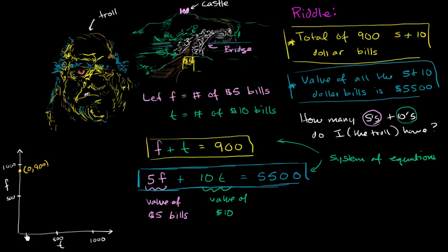So it's going to be the point 900 tens, 0 fives. So all the combinations of f's and t's that satisfy this are going to be on this line, right over there. I'll just draw a dotted line because it's easier for me to draw it straight. So that represents all the f's and t's that satisfy the first constraint. Obviously there's a bunch of them, so we don't know which one is actually what the troll has. But lucky for us, we have a second constraint, this one right over here.